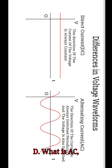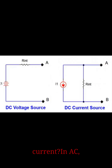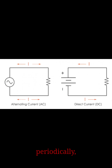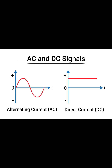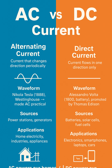What is AC — alternating current? In AC, the flow of electric charge reverses direction periodically, alternating back and forth. Its source is generators at power stations. The waveform is a sinusoidal sine wave. Common uses include electricity supply in homes, offices, and industries.